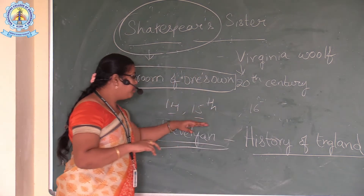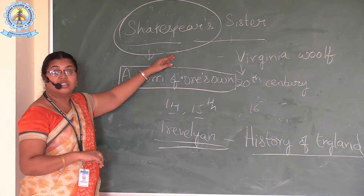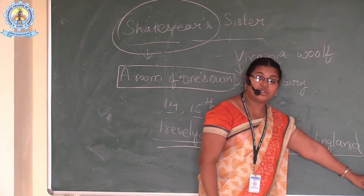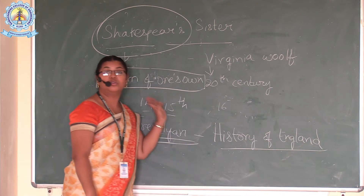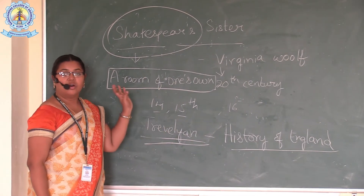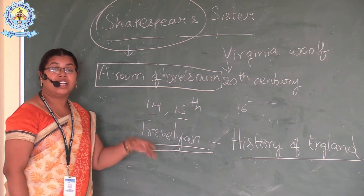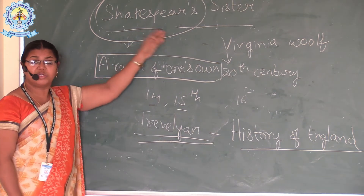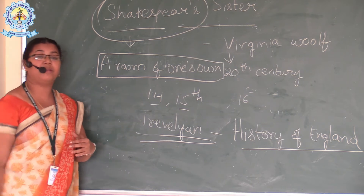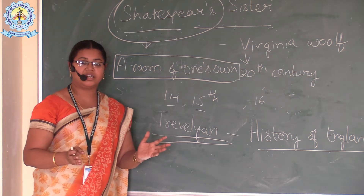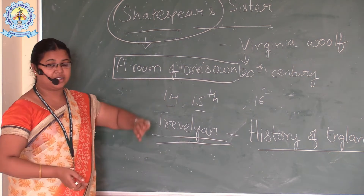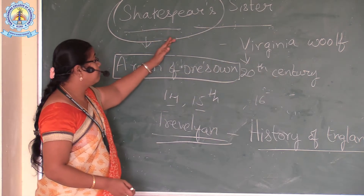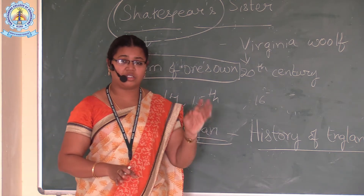In the 17th and 18th centuries, women were treated as slaves or servants. They were given no opportunity to project their talent. If a lady had talent or intelligence, she was not acknowledged — instead she was treated as a witch, thrown out of the village, and forced to lead an isolated life just for thinking differently.